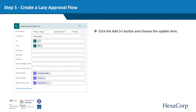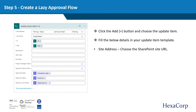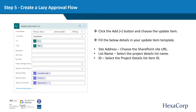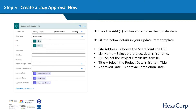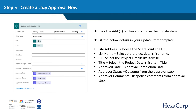Click to add a new action and choose the Update Item action. Provide the following details: Site Address — choose the SharePoint site URL. List Name — select the project details list name. ID — select the project details list item ID. Title — select the project details list item title. Approved Date — the approval completion date. Approver Status — the outcome from the approval step. Approver Comments — the response comments from the approval step.